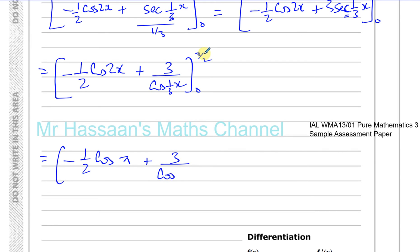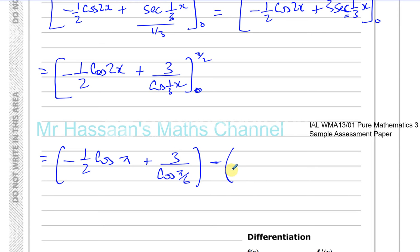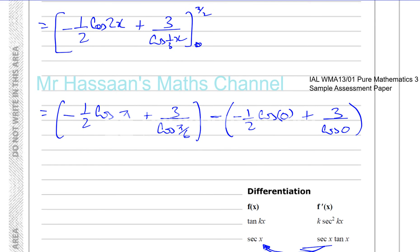A common mistake is to ignore the lower limit of zero, as students sometimes did in P2 where zero limits made terms vanish. But that's not always the case now. For example, e to the power of zero is 1, and cos(0) is 1 — so zero in the limit does not make the whole expression zero. Always substitute the lower limit. Substituting 0 gives minus half times cos(0) plus 3 over cos(0), which will give a nonzero result.